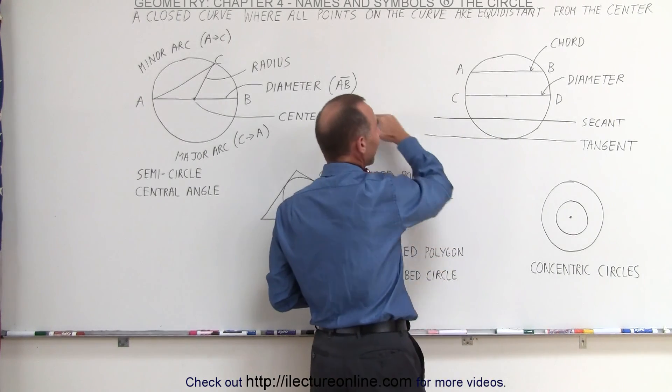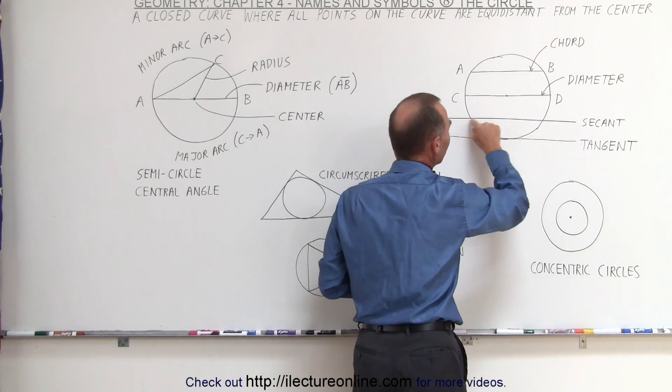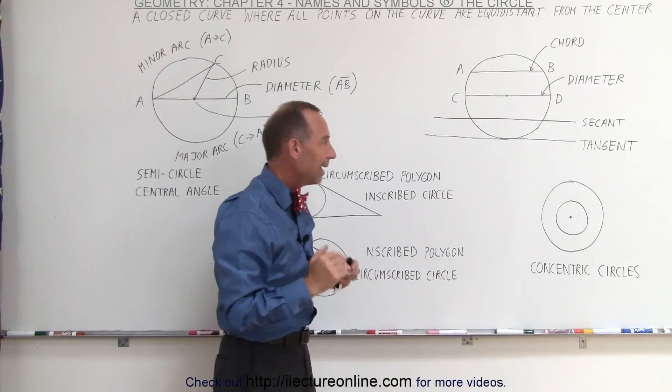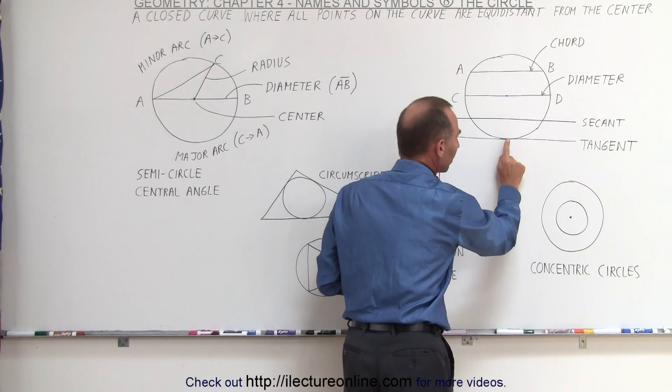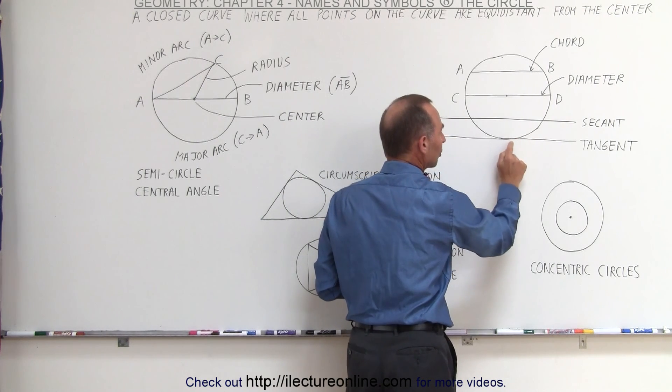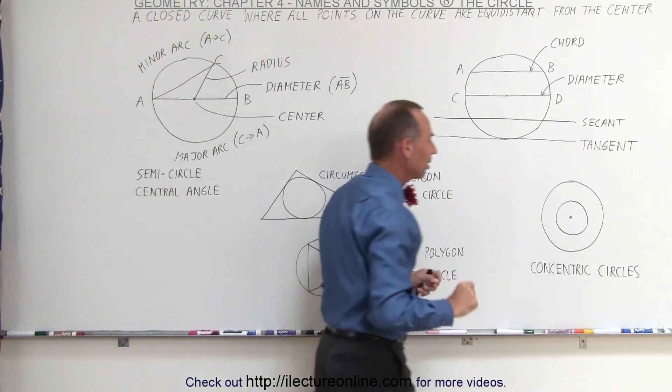Now if we draw a line through the circle and it hits the circle at two separate points like this, that's called the secant line. And if we draw a line in such a way that it only touches the circle at one particular point, only one point right here on the edge of the circle, then that's called the tangent line.